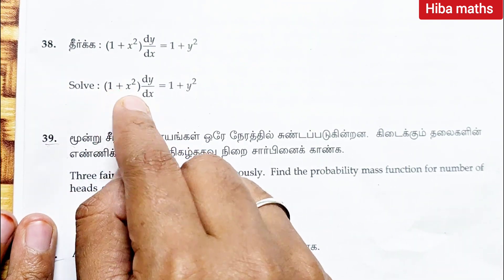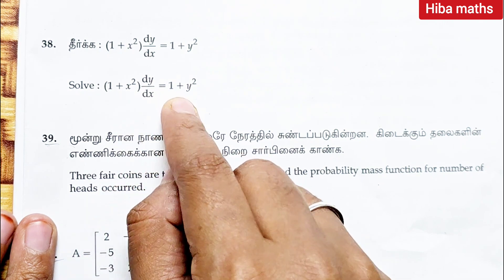Question 38: solve 1 plus x square dy by dx is equal to 1 plus y square.